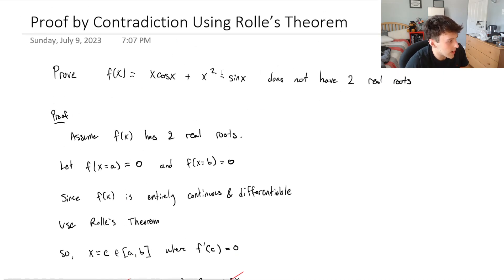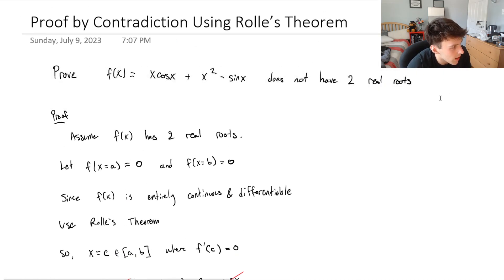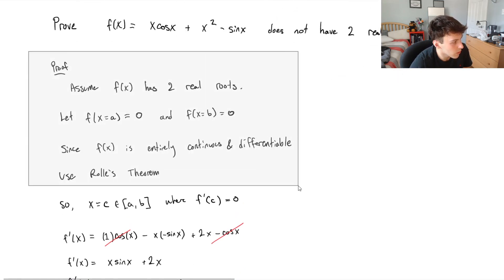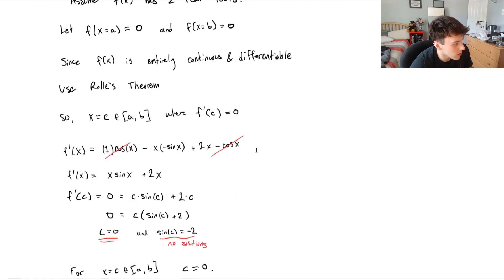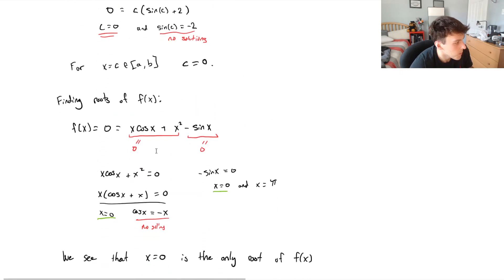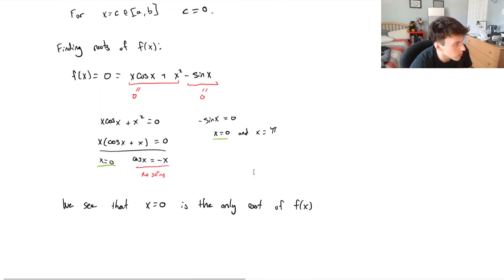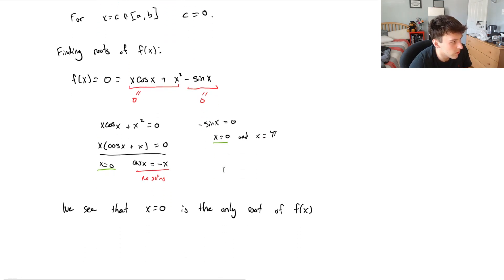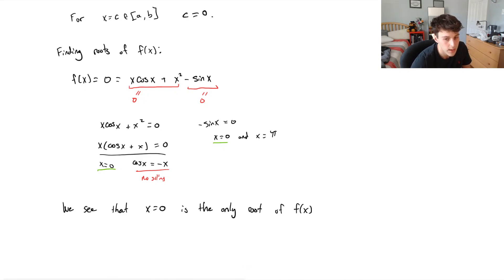And that's exactly what it asked us to do: prove that f(x) does not have two real roots. We assumed that there were two real roots, used Rolle's Theorem to find the value of c where that must be true, then found the roots of f(x) and saw that it contradicted the results. That's about it for this question.